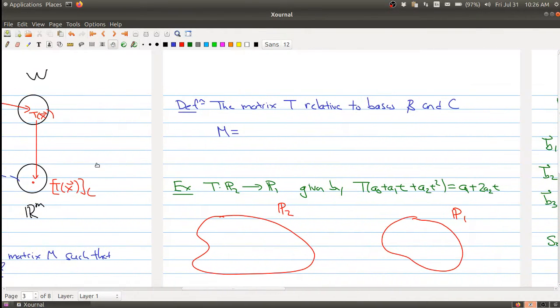So let me add a definition here. The matrix T relative to the bases B and C is the matrix that you get by taking the first basis element of B, sticking it into your function, and writing it with respect to the C coordinate, and that becomes your first column. And then you repeat this process to find the remaining columns.